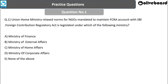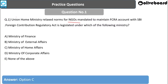First question: Union Home Ministry recently relaxed the norms for NGOs mandated to maintain an FCRA account with SBI. The Foreign Contribution Regulatory Act is legislated under which ministry? Options: Ministry of Finance, Ministry of External Affairs, Ministry of Home Affairs, Corporate Affairs, or None of the above. The answer is Ministry of Home Affairs. Don't be confused — though it involves foreign contributions and finance, it is the Ministry of Home Affairs that deals with FCRA.